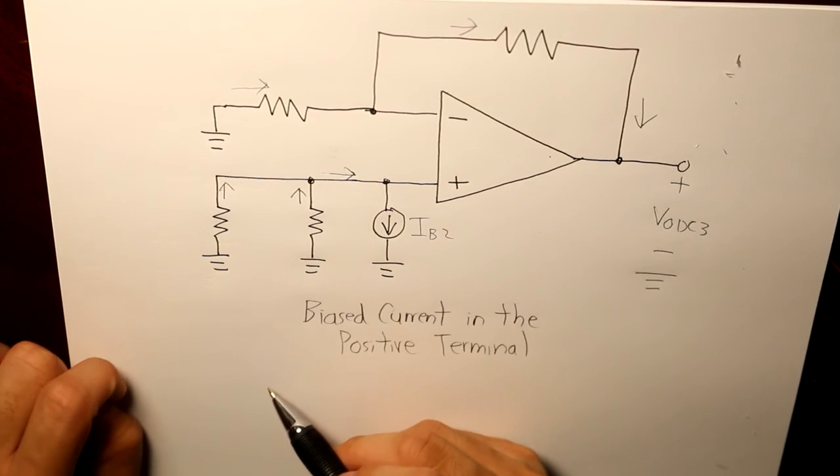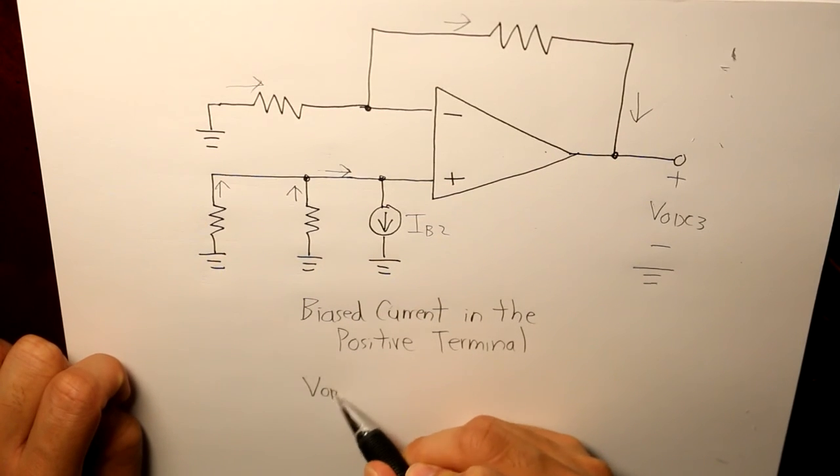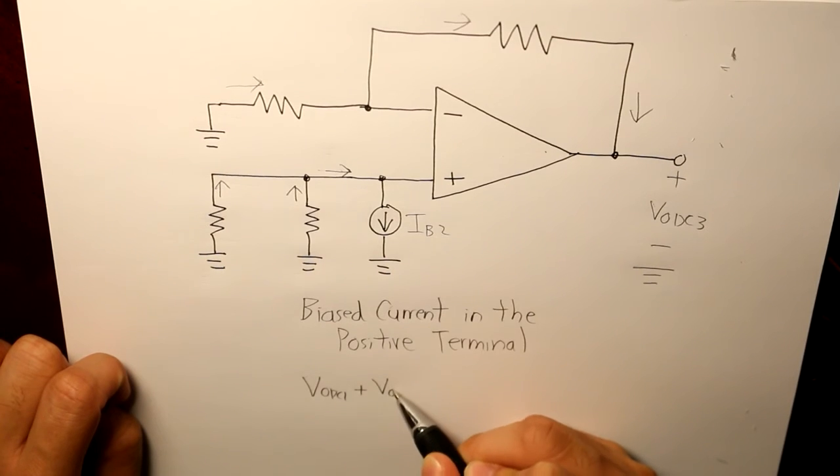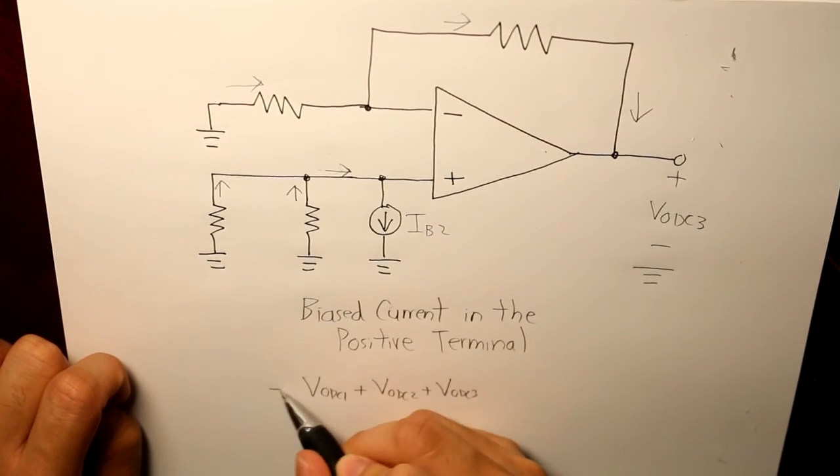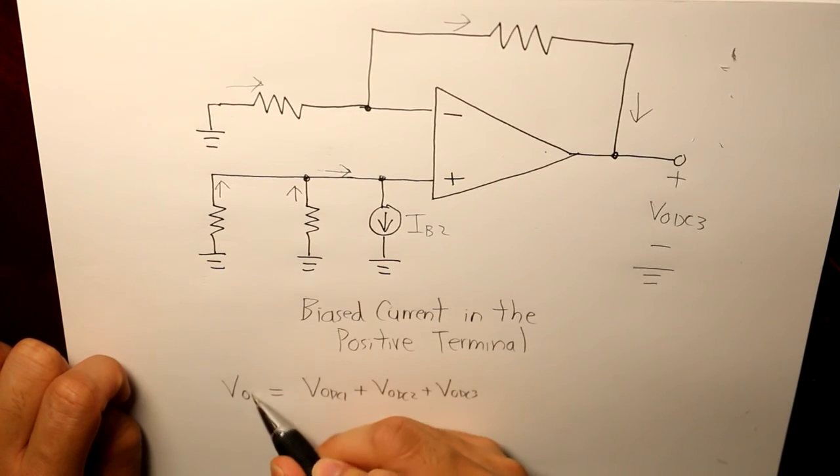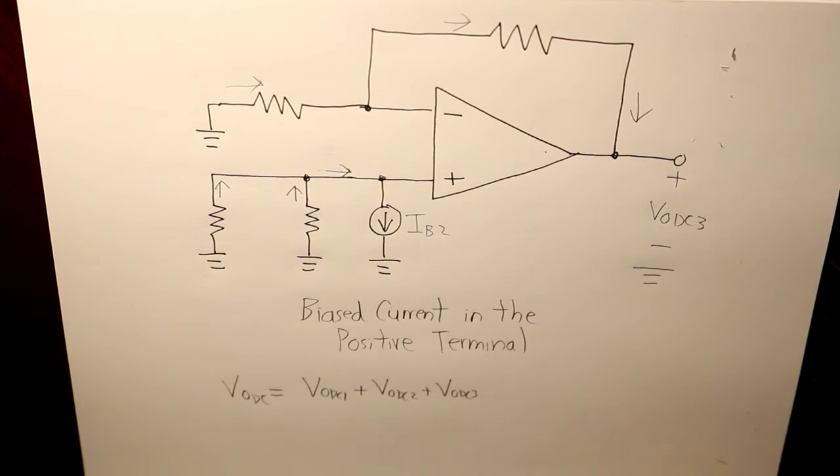If we combine all of them up, that would basically be what our entire DC imperfection is going to be.